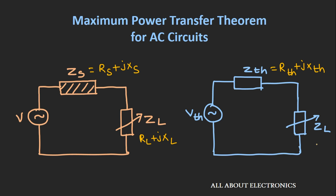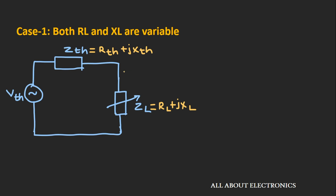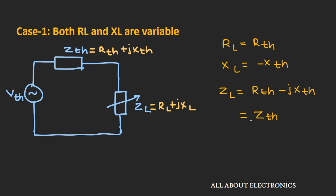There are different cases possible for this load impedance. Let's see all the different cases and find the value of load impedance which gives maximum power transfer. In the first case, both RL and XL are variable. For maximum power transfer, the value of RL should equal Rth and XL should equal −Xth. So the load impedance should be Rth − j·Xth, which is nothing but the complex conjugate of the Thevenin's equivalent impedance.